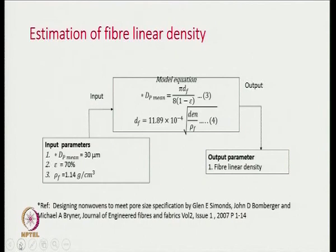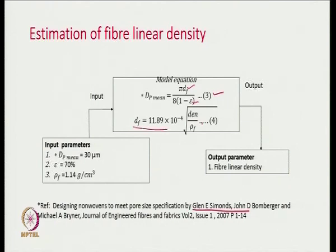The other aspect is estimation of fiber linear density. Here we make use of two equations. Equation number 3 relates the average pore diameter to fiber diameter and porosity, and was developed by a specific researcher. We also make use of the diameter versus linear density relationship given in equation number 4. This is a straightforward equation — many of you will know the relationship between diameter and denier of a fiber.